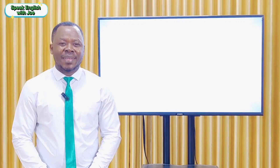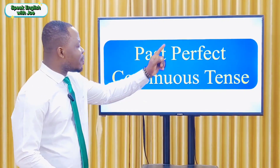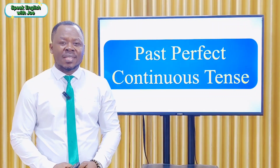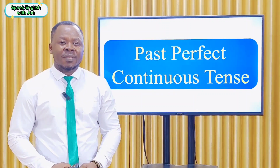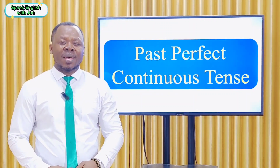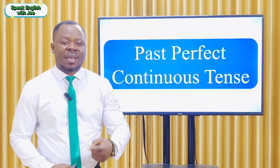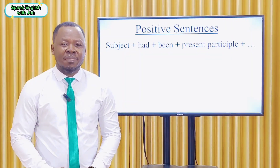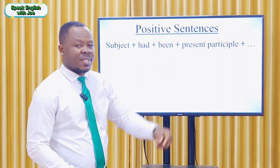Hi everybody, I'm Teacher Joe. In this video I will introduce the past perfect continuous tense. The past perfect continuous tense is used in a sentence to show an action that started at some time in the past and continued until a specific time in the past. Let's begin by looking at how to make affirmative or positive sentences with the past perfect continuous tense.